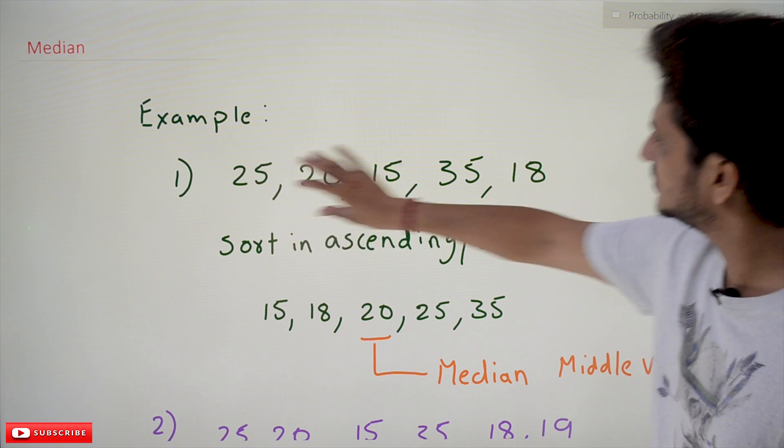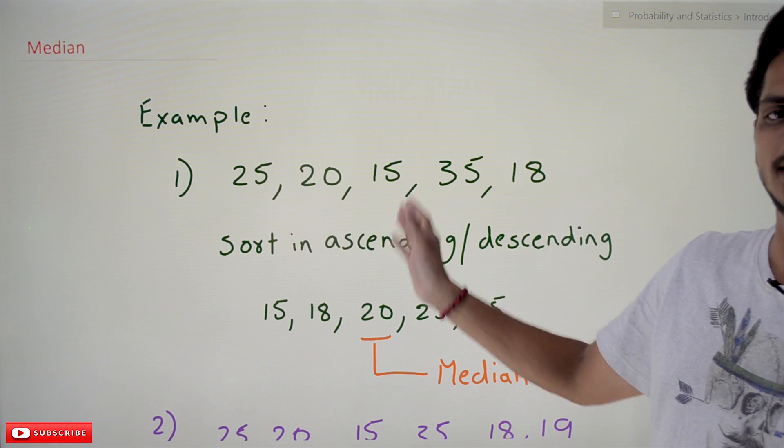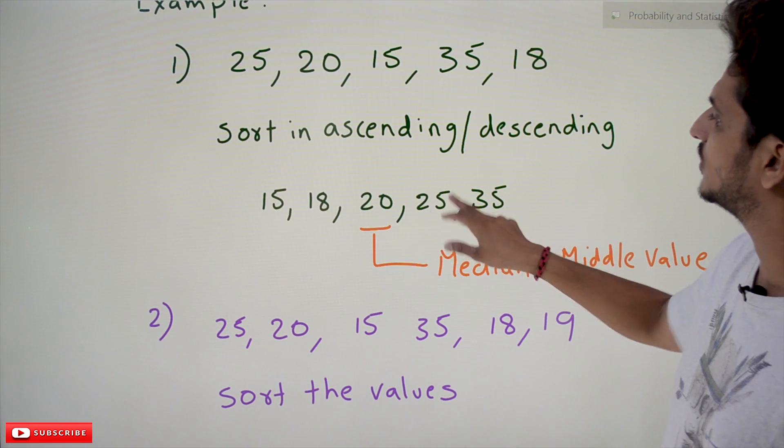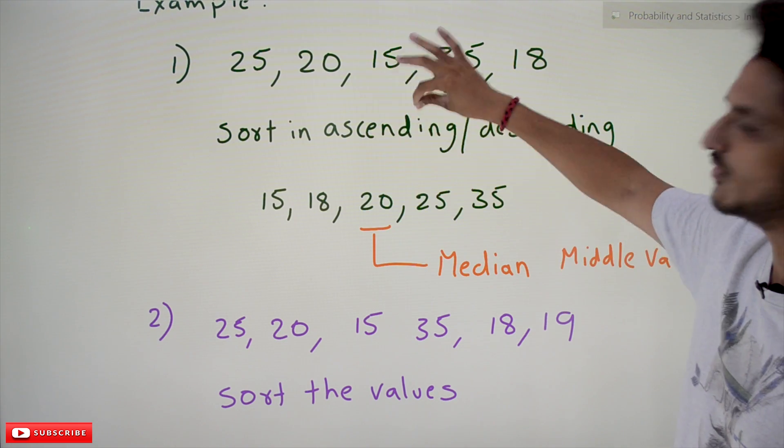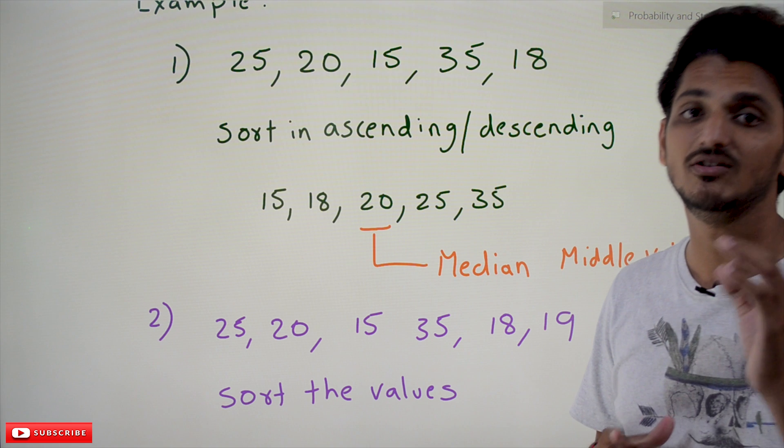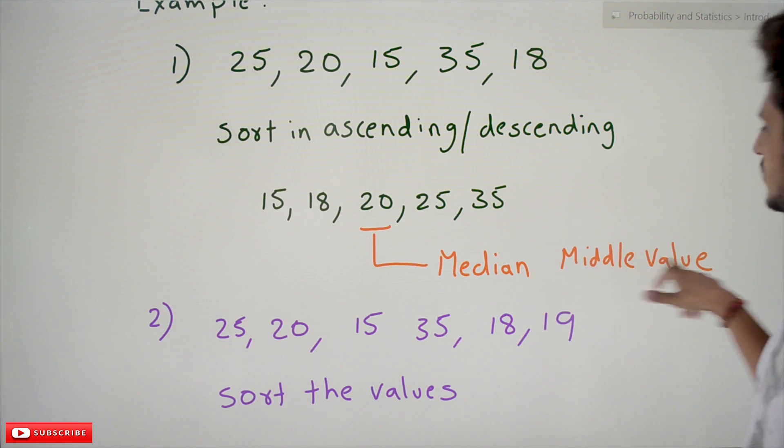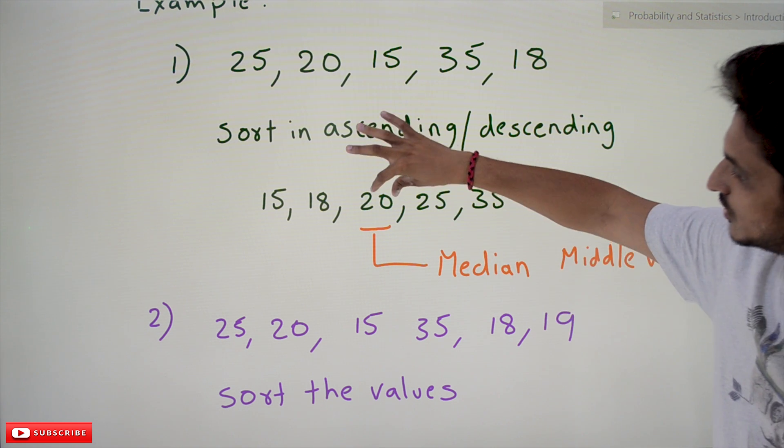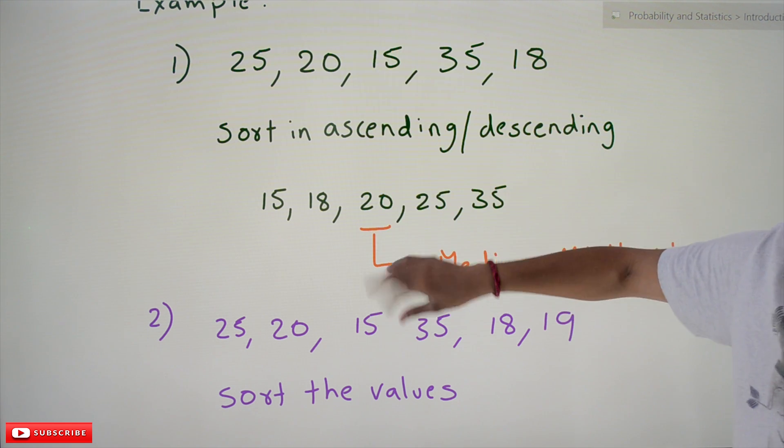Arrange these elements in sorted order, in ascending or descending order. After arranging these elements: 15, 18, 20, 25, 35. Pick the middle one. That is what we call the median value. So median equals the middle value. Here we have an odd number of data points, that's why we easily picked the middle value.